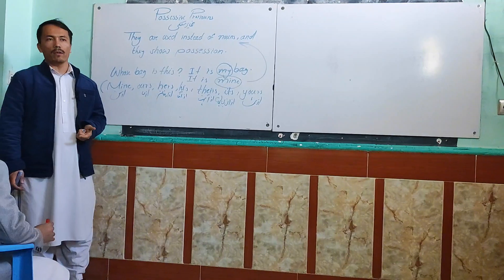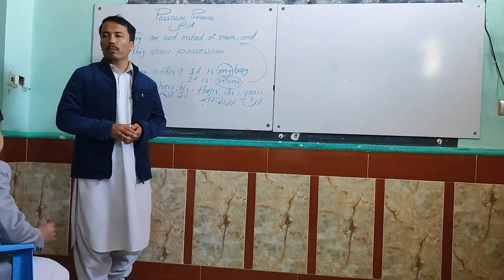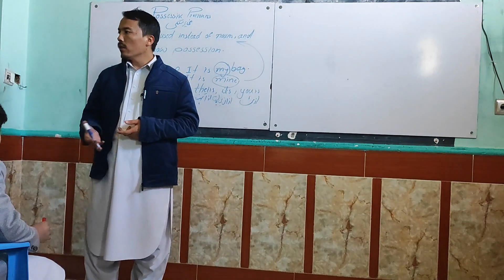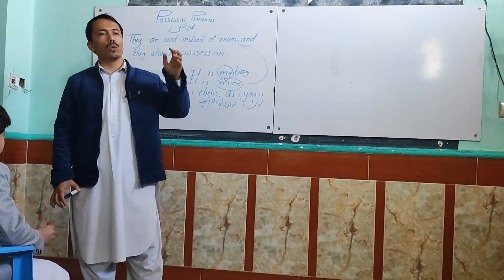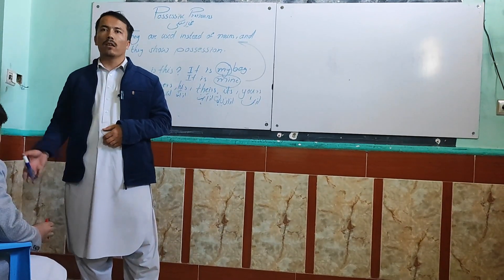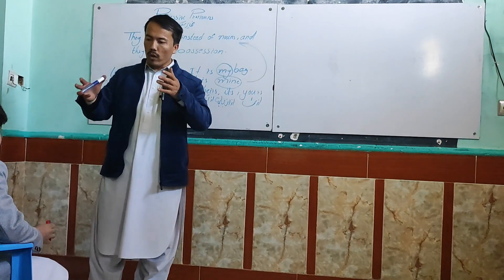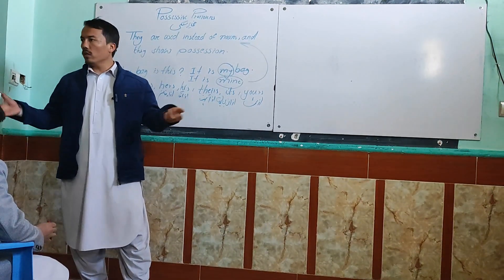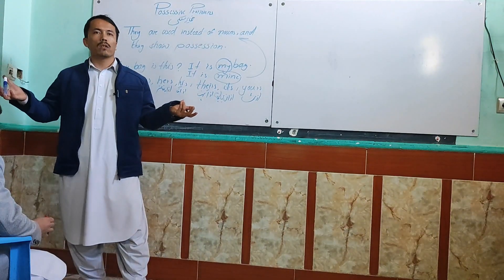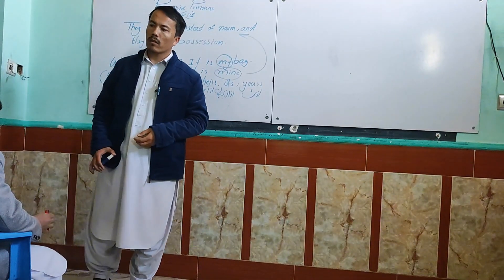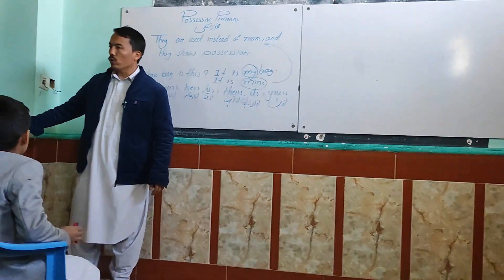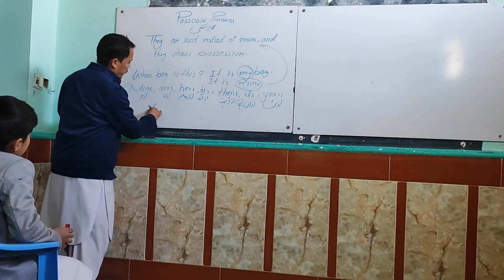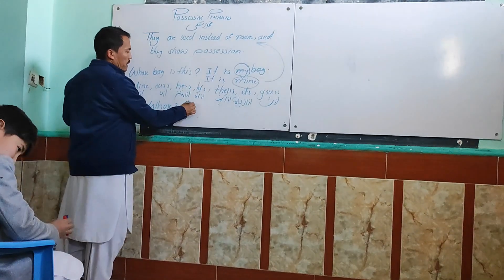When do we use possessive pronouns? We use possessive pronouns when we are asked a 'whose' question — like 'Whose chair is this?' 'Whose pen is this?' 'Whose teacher is he?' 'Whose mother is she?' If we are asked a question with 'whose,' then we use possessive pronouns. We don't just say 'it's mine' randomly — someone must ask us first. For example: 'Whose marker is this?' — 'It's mine' or 'It's yours.' The meaning of 'whose' is asking about possession.